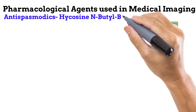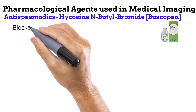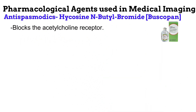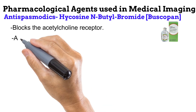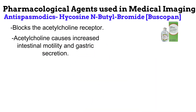First off, the antispasmodics. One example is Hyoscine N-butyl bromide, commonly marketed as Buscopan. Buscopan is an anticholinergic, which means that it blocks the acetylcholine receptor, preventing acetylcholine from working. Acetylcholine is a neurotransmitter that causes increased intestinal motility and gastric secretion — it practically increases bowel movement. Thus, when Buscopan blocks the activity of acetylcholine, bowel movement is reduced.